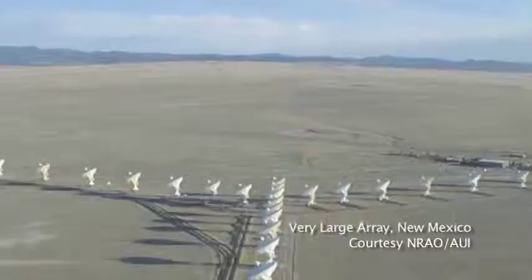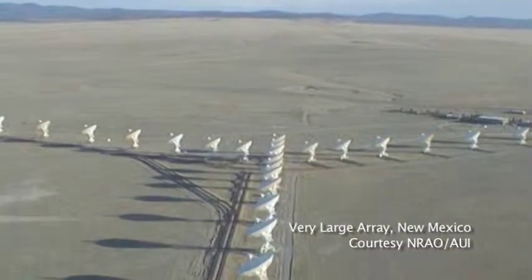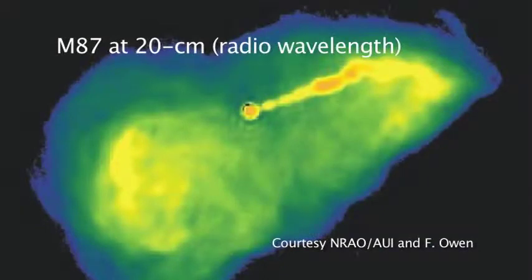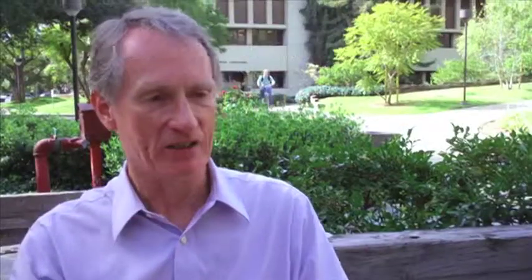In the same way that interferometers, the very large array in New Mexico for example, have changed the way that we observe the radio sky and shown us things that were impossible to see before, we're talking about the same kind of change in how rapidly and how many things we can look at.